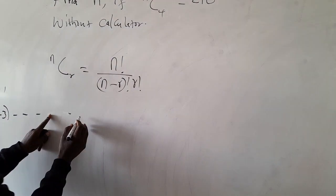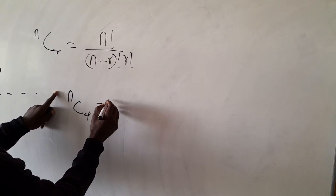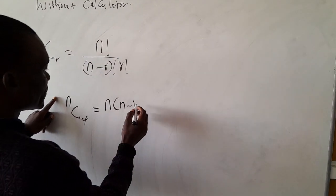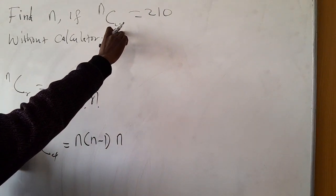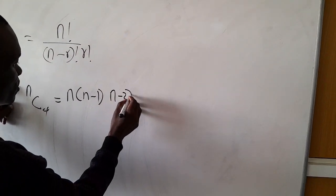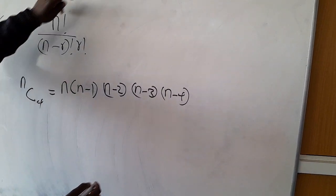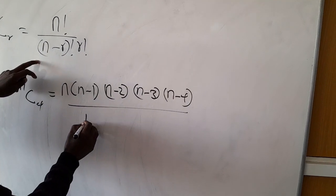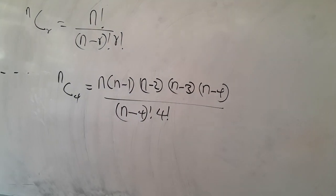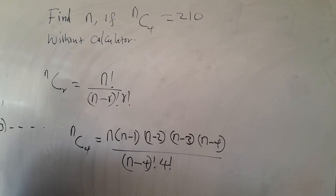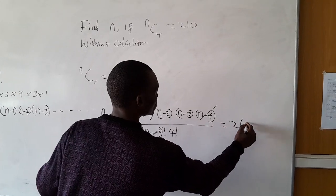So in this case, we have nC4 is equal to n into n minus 1, n minus 2, n minus 3, then n minus 4, because I have 4 in the denominator. I will stop there. That is n minus 4 factorial and 4 factorial. So n minus 4 cancel n minus 4, and all this equal to 210.